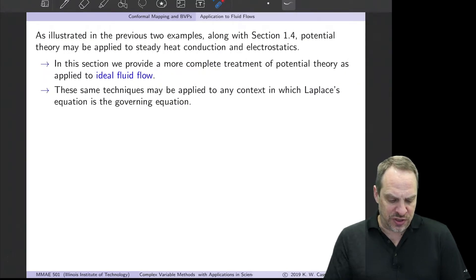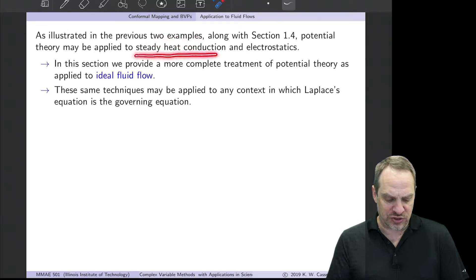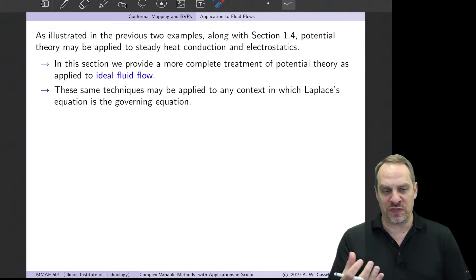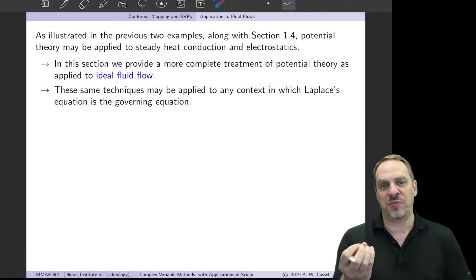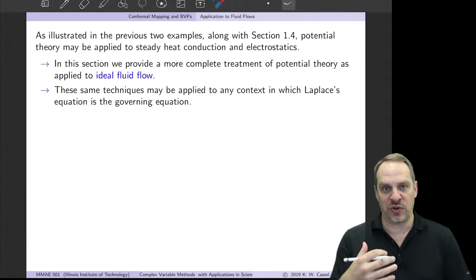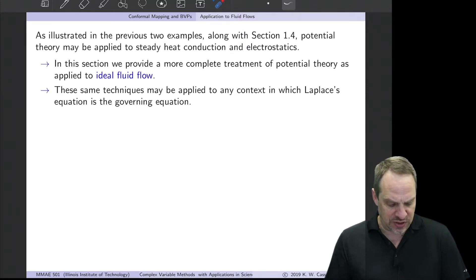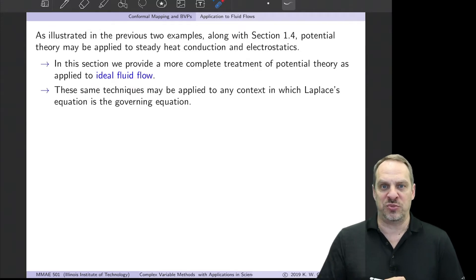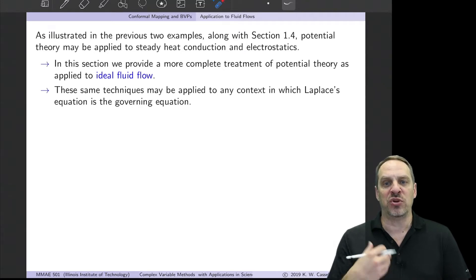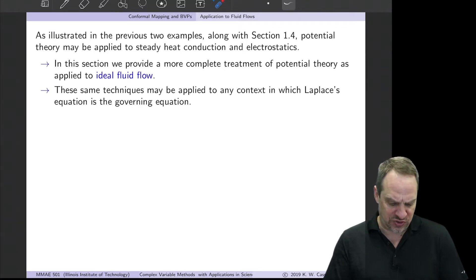We've illustrated in the last couple of examples how we can treat steady heat conduction as well as electrostatics. As I've said, we can couch it in terms of any one of these physical phenomena that are governed by Laplace's equation. Now we'll add fluid flow to that list. It's also called ideal fluid flow because there are a number of assumptions that have to be made, so it's a highly idealized situation. More commonly we refer to it as potential flow.